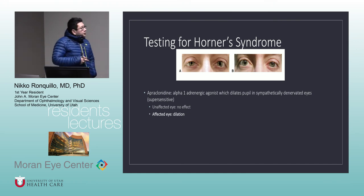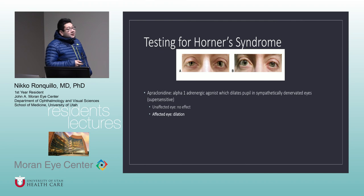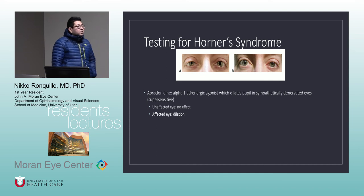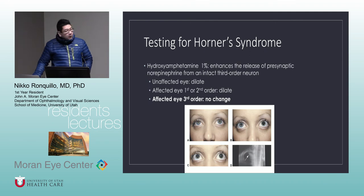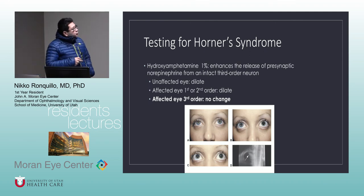Another test for Horner's is apraclonidine, an alpha-1 adrenergic agonist which dilates the pupil sympathetically, especially in denervated eyes. In the unaffected eye it has no effect, but in the affected eye there is dilation. Compared to cocaine, the anisocoria reverses with apraclonidine testing.